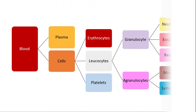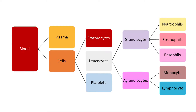For better understanding of the components of blood, we will discuss it with the help of a flowchart. Blood is basically divided into two parts: plasma and cells. The cells are also known as formed elements, which are divided into erythrocytes, leukocytes, and thrombocytes. Leukocytes are further divided into granulocytes, which contain granular cytoplasm, and agranulocytes, whose cytoplasm is deprived of granules. Granulocytes are further divided into neutrophils, eosinophils, and basophils, while agranulocytes are divided into monocytes and lymphocytes.